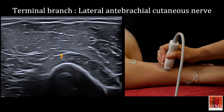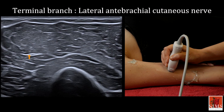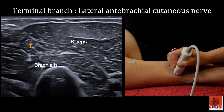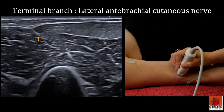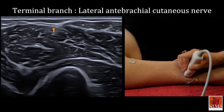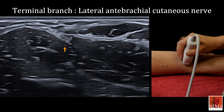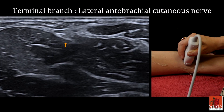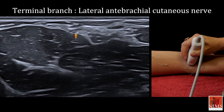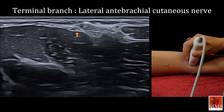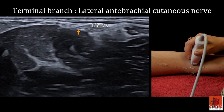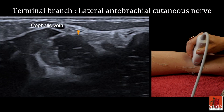The musculocutaneous nerve then runs towards the surface to cross the antebrachial aponeurosis and is located in the subcutaneous layers. When it pierces through the antebrachial fascia, the musculocutaneous nerve will be in close contact with the medial aspect of the biceps tendon and the lateral aspect of the cephalic vein.